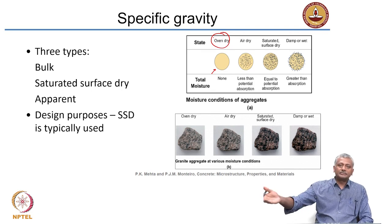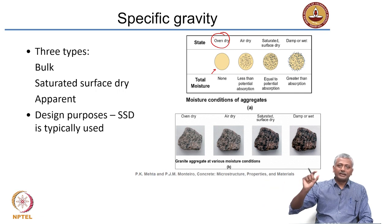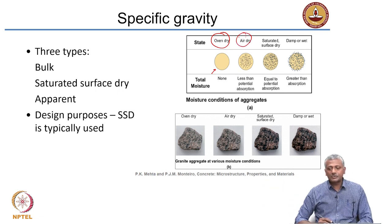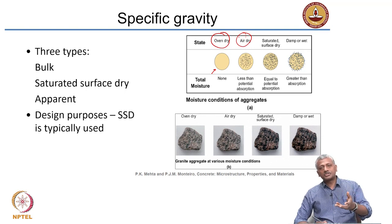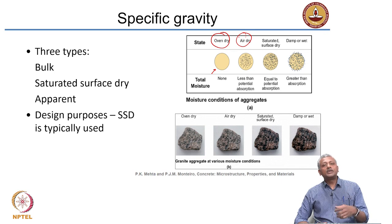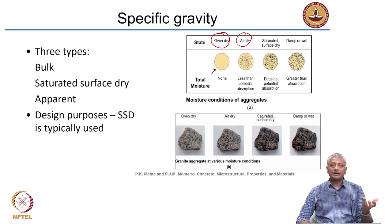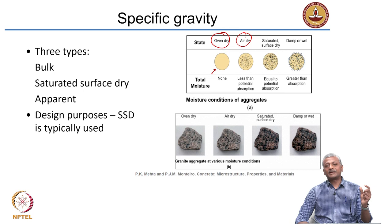If you take the aggregate which is lying on the roadside, that is basically the air dry state. In that case, there may be some moisture inside. You need to determine it by putting this aggregate inside the oven and finding out how much moisture it has. Especially after a rainy day, the moisture inside the aggregate may have increased significantly.